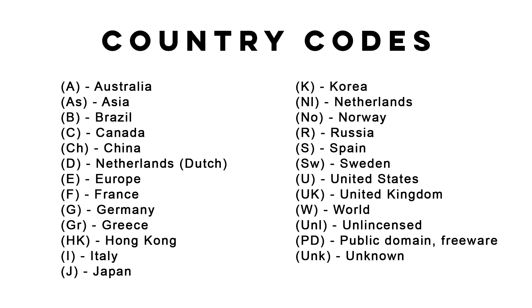The next code to consider is the country code. In many cases, you can use the country code to determine the language that the ROM will be in. The most common English language codes are U for United States, UK for United Kingdom, and W for world. There are quite a few different country codes that could pop up in ROM names, as you can see.